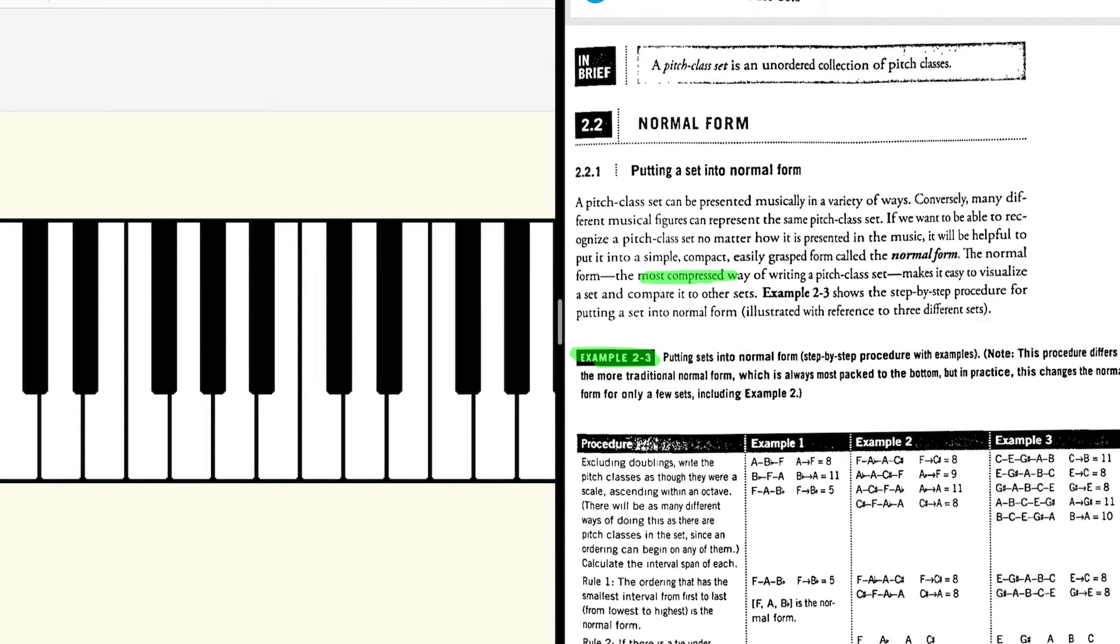Five, nine, ten. You want to write everything within an octave. So here's five, nine, ten. You can probably tell that if we moved any one of those notes, it would no longer be the most compact way of playing those three notes. So this is your normal form. Five, nine, ten. That's three different ways of accurately finding the normal form of a set.